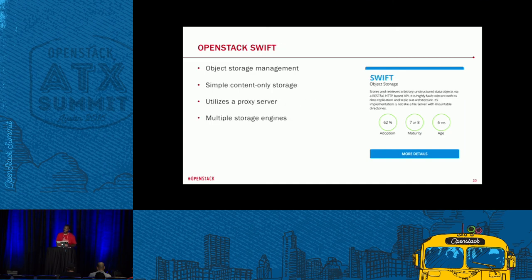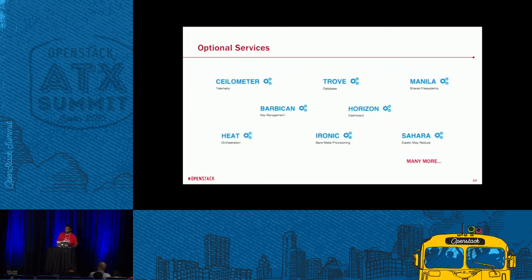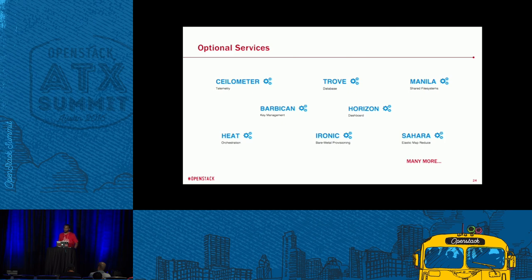OpenStack Swift is object storage. Basically you just want to store some stuff — small files essentially. It's best utilized to store small images. It's good for websites that have a lot of images where you want to store them off somewhere and provide a centralized location. Then there are optional services: Ceilometer, Trove for databases, Manila, and a whole lot more. But the core services are what most people are going to install, and that will pretty much get you where you need to be.